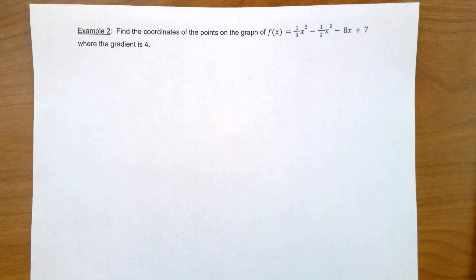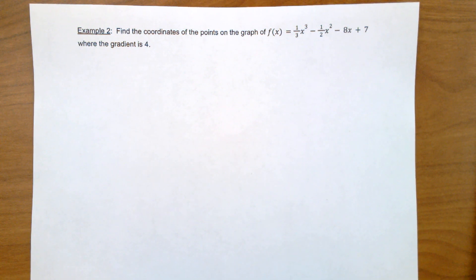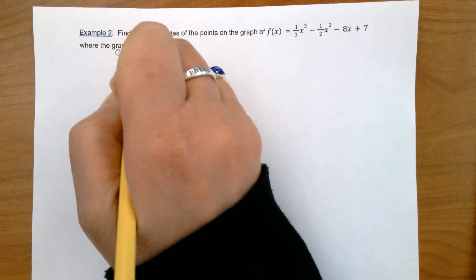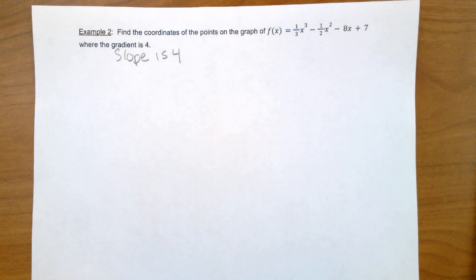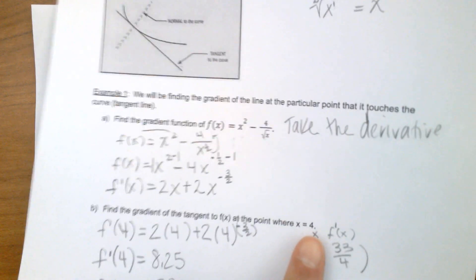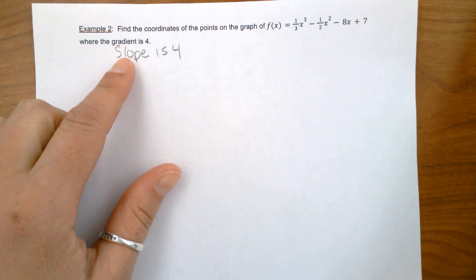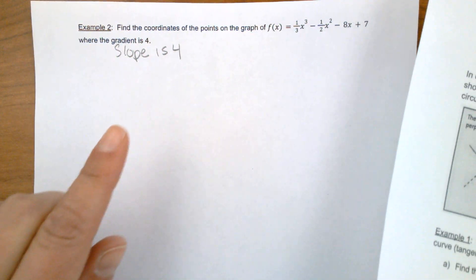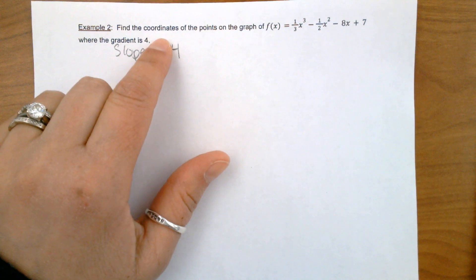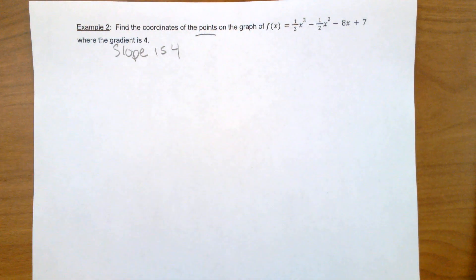Example two. We need to find the coordinates of the points on the graph of f of x equals 1 third x cubed minus 1 half x squared minus 8x plus 7, where the gradient is 4. So they're giving us the slope — the gradient is 4. In our last example, they gave us the x value as 4. Now they're giving you the slope as 4, and we are going to be finding coordinates of points. This is a multi-step problem that I'm going to walk you through.